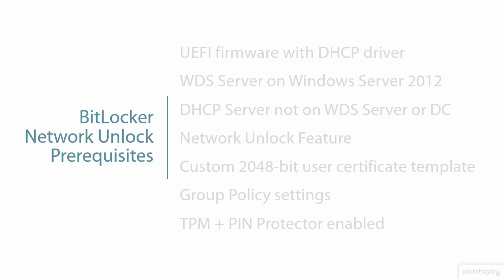Let's talk very specifically about what you have to have so that you know what you need to implement should you want to incorporate Network Unlock in your BitLocker infrastructure. Number one, you have to have machines with the UEFI infrastructure — no traditional BIOS infrastructure. That firmware also has to have a DHCP driver built into it. Most UEFI machines these days have that DHCP driver built in, but not all machines are UEFI, so most older equipment won't support it. Without that, you can't use Network Unlock.